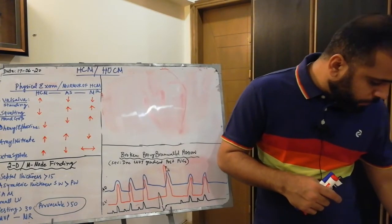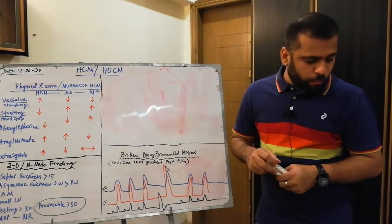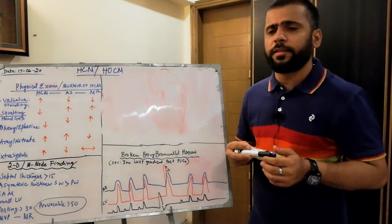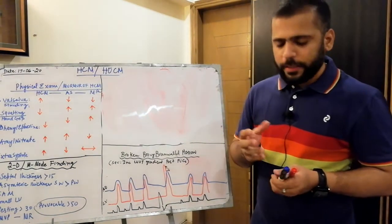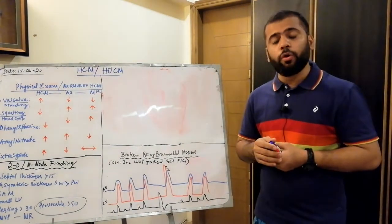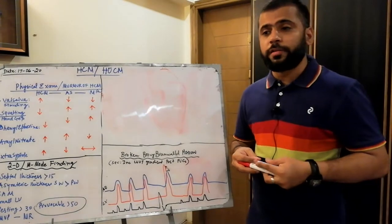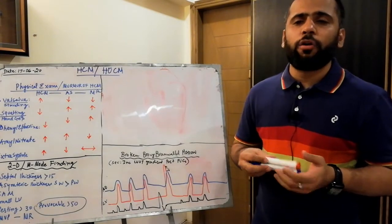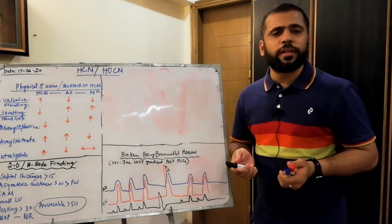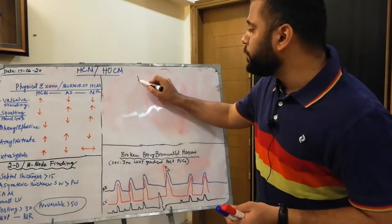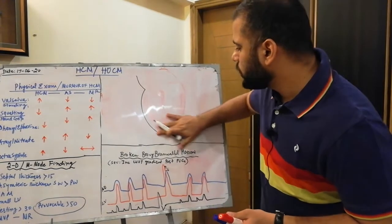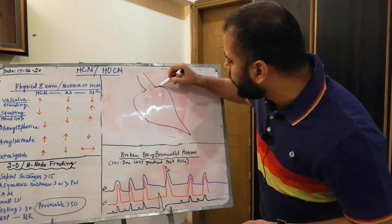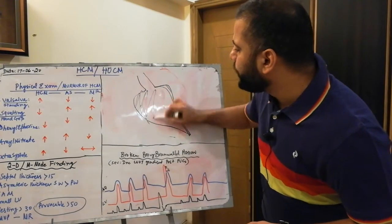When there is a discrepancy between symptoms and findings in your patient, you will go for cardiac catheterization. In cath, you will perform ventriculography and check coronary flow. On ventriculography, you will see a spade-like shape of the LV.